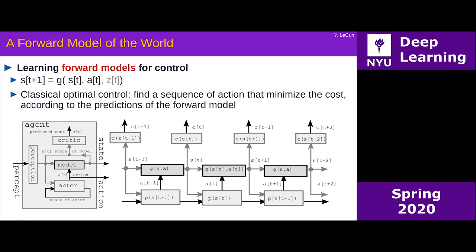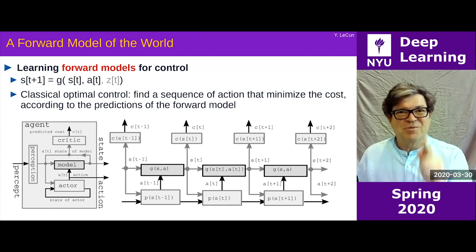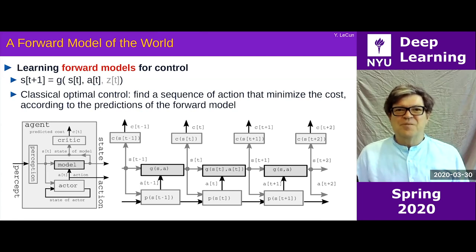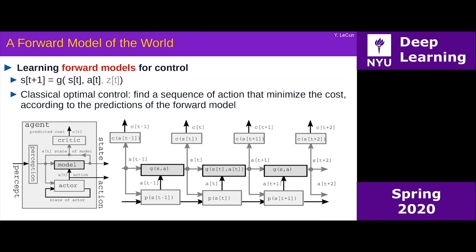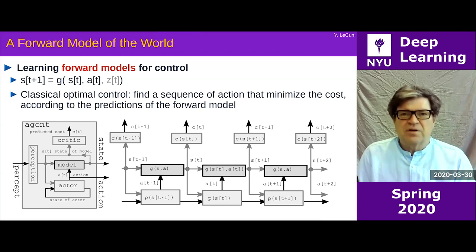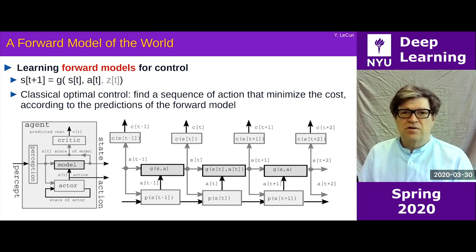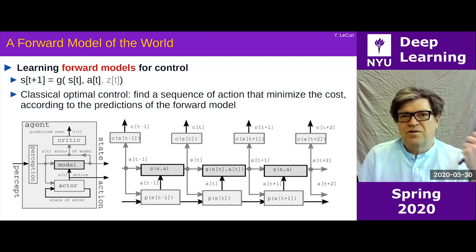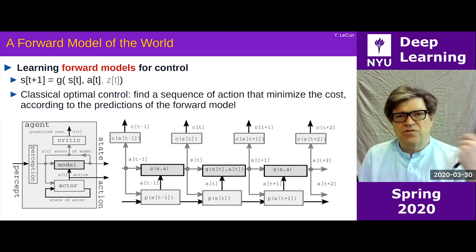People are surprised — this is not reinforcement learning. This has absolutely nothing to do with reinforcement learning. On the left here, you have a little agent with a model of the world it can run forward. It has an actor — a policy that produces a sequence of actions fed to the model — and then a critic, which predicts what the cost of the final state or trajectory is going to be according to the criterion. The critic computes basically the cost of not fulfilling the goal.